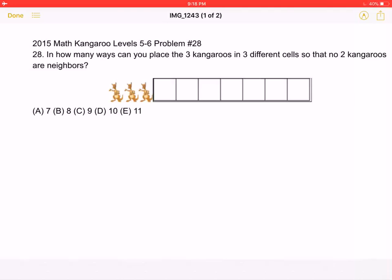This is the 2015 Math Kangaroo Levels 5-6, problem number 28. In how many ways can you place the three kangaroos in three different cells so that no two kangaroos are neighbors?